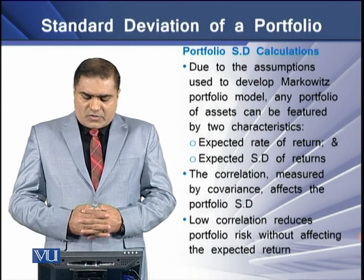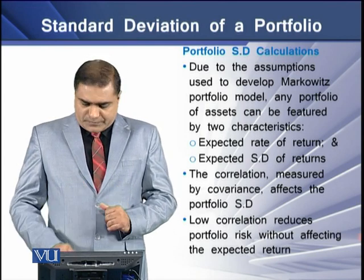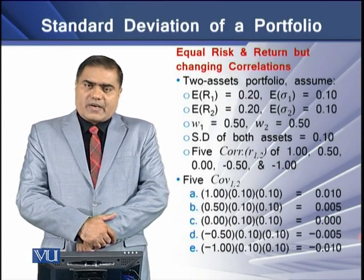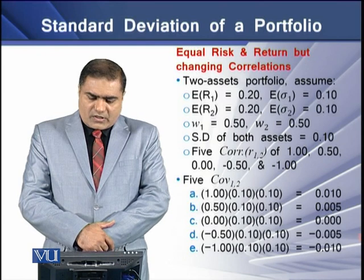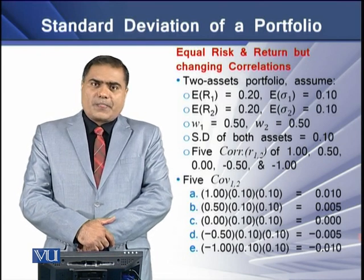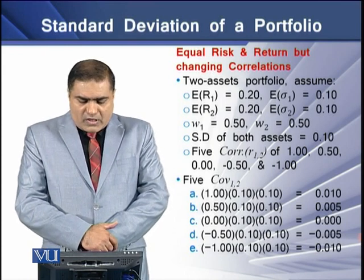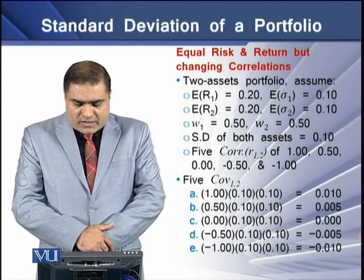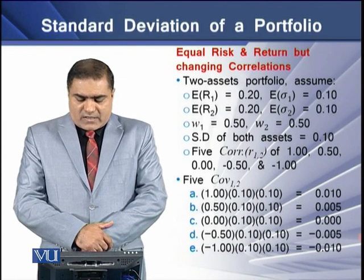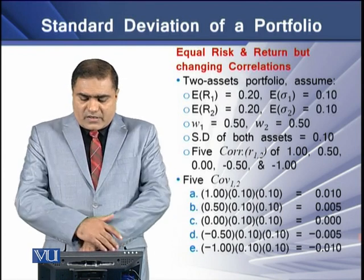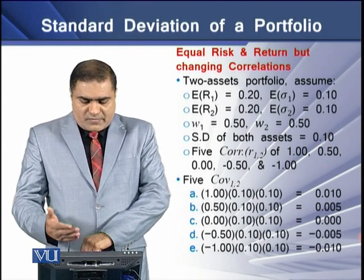Lower correlation reduces portfolio risk but does not affect the expected returns. As an example, consider a case with equal risk and return but changing correlation. We have a two-asset portfolio where the expected return on both asset 1 and asset 2 is 20%, both have a standard deviation of 10%, and both are equally weighted at 50% each.